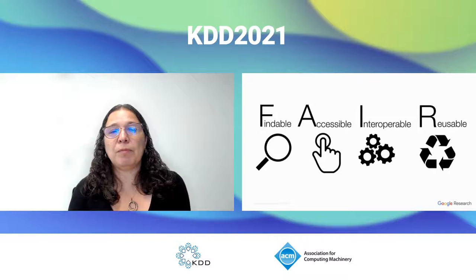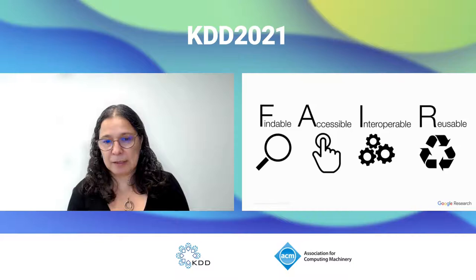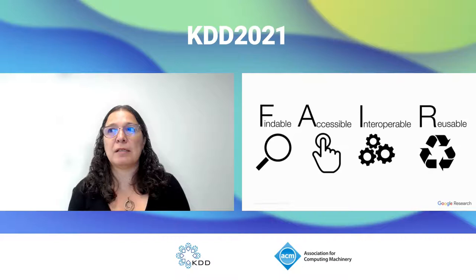In many disciplines, scientists started thinking about this in the context of FAIR data — a well-known concept in geosciences and life sciences. At KDD, not many people may have heard of FAIR data, but it's an interesting concept encompassing how many scientists outside computer science think about sharing data. Data needs to be Findable, Accessible, Interoperable, and Reusable.